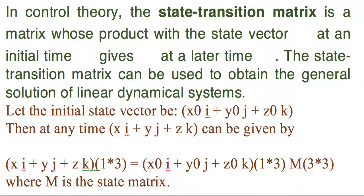Looking at what is the state transition matrix. So in control theory, a state transition matrix is a matrix whose product with the state vector at initial time